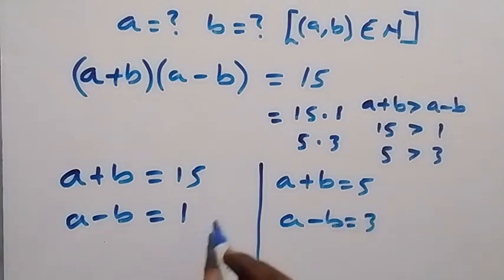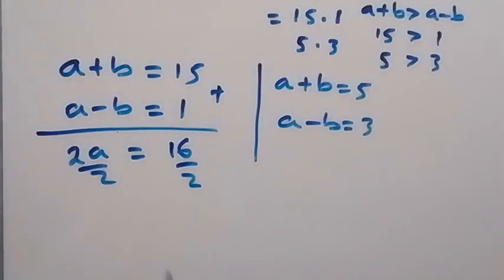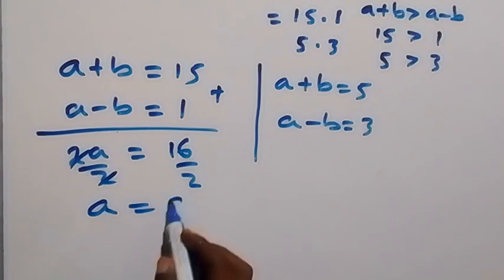When we solve the first case, we add these two equations and eliminate b. We have a+a, that's 2a, equals 15+1, which is 16. Dividing both sides by 2, we get a = 8.